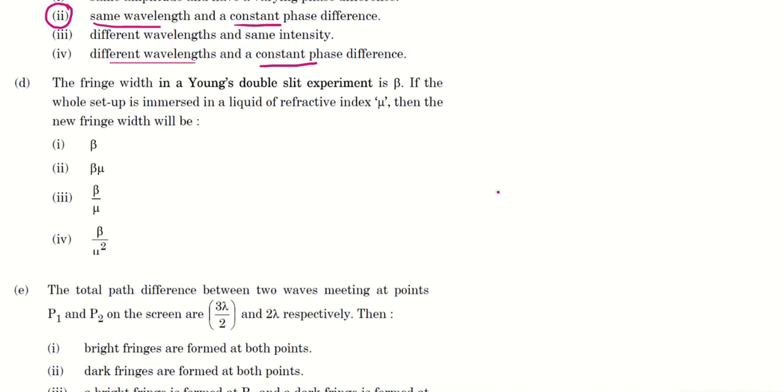For example, we do the Young's double slit experiment in air and we are doing the same in a liquid of refractive index mu. So here we can think of the wavelength of the light. We know beta equals lambda D by d, which means that beta is directly proportional to lambda.